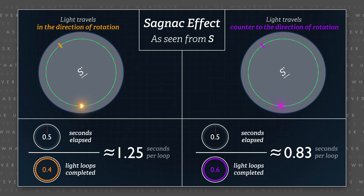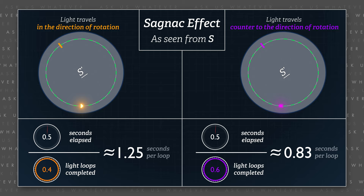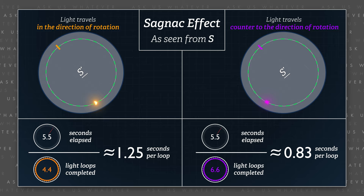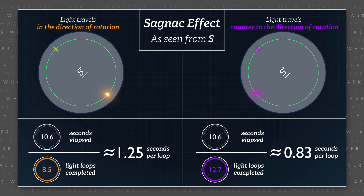even though observers in frame S would measure different downstream and upstream travel times. But in a closed loop with only one clock, it's not possible to offset a single clock with itself. Essentially, a closed loop Sagnac setup removes the clock synchronization variable.